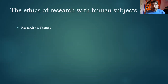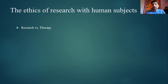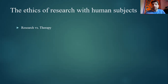A key distinction here: research versus therapy. Therapy describes an intervention that is for the patient's benefit — whoever's getting the therapy, it should be for their own good. Research, though, is primarily not for the research subject's benefit — the research subject is being used in an experiment, hopefully to benefit somebody else down the line. That's a key distinction, though sometimes it's blurred, as in human challenge trials.